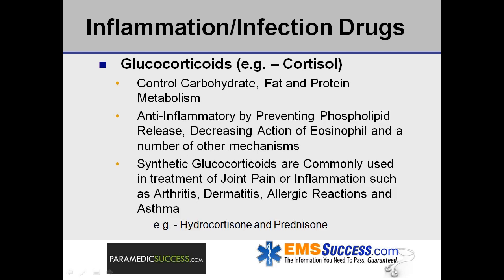Glucocorticoids, such as cortisol, control carbohydrate, fat, and protein metabolism, and are anti-inflammatory by preventing phospholipid release and decreasing the action of eosinophils among other mechanisms. Synthetic glucocorticoids are commonly used in the treatment of joint pain or inflammation such as arthritis, dermatitis, allergic reactions, and asthma. Examples are hydrocortisone and prednisone.